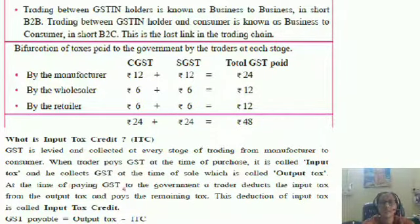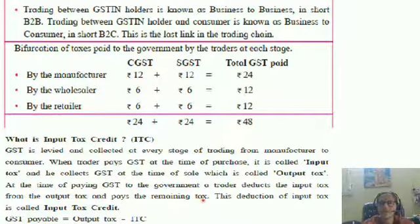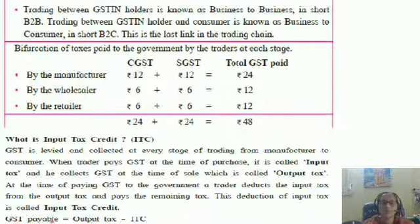At the time of paying GST to the government, a trader deducts the input tax from the output tax and pays the remaining tax. This deduction of input tax is called input tax credit. So, GST payable equals output tax minus input tax.